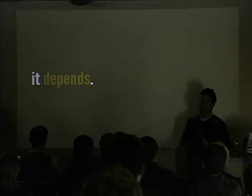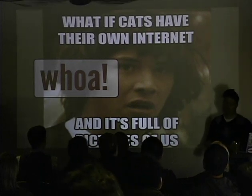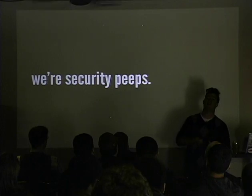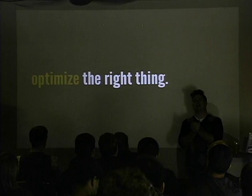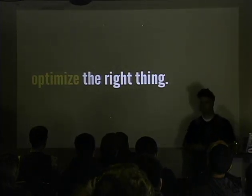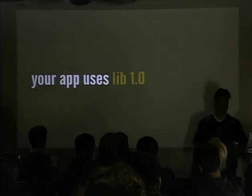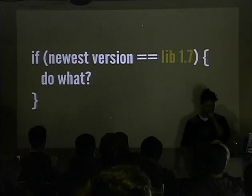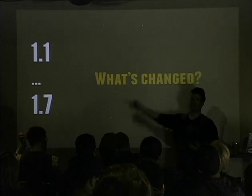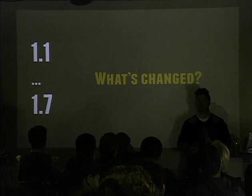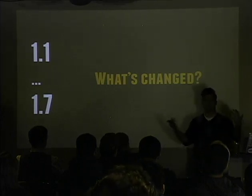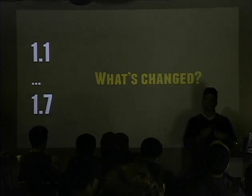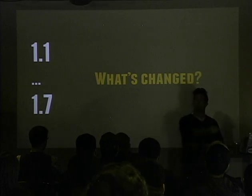When the foundation changes, it depends on what you do. We're security people - we need to make sure we're optimizing the right thing. If your application uses version 1.0, what happens when 1.7 is released? You have to ask: what's changed between these versions? What's the bulk of the data? Can you benefit from it? Does 1.7 give you the most benefit, or maybe 1.4 is sufficient?